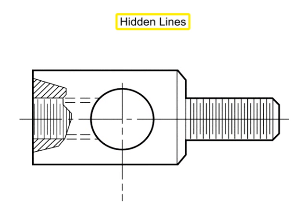Hidden lines consist of short dashes, evenly spaced. These lines are used to show the hidden features of a part. They begin with a dash in contact with the line from which they begin, except when such a dash would form a continuation of a full line.